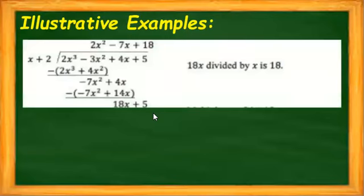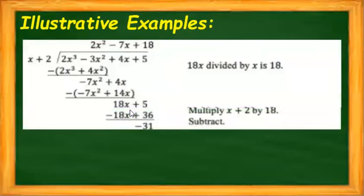We repeat the process again. Our first term is 18x. We divide it by x, which gives us an answer of 18. We place 18 in our quotient part. And then we multiply 18 by our divisor x plus 2, and it will give us 18x plus 36. When we subtract again, we'll get a remainder of negative 31.